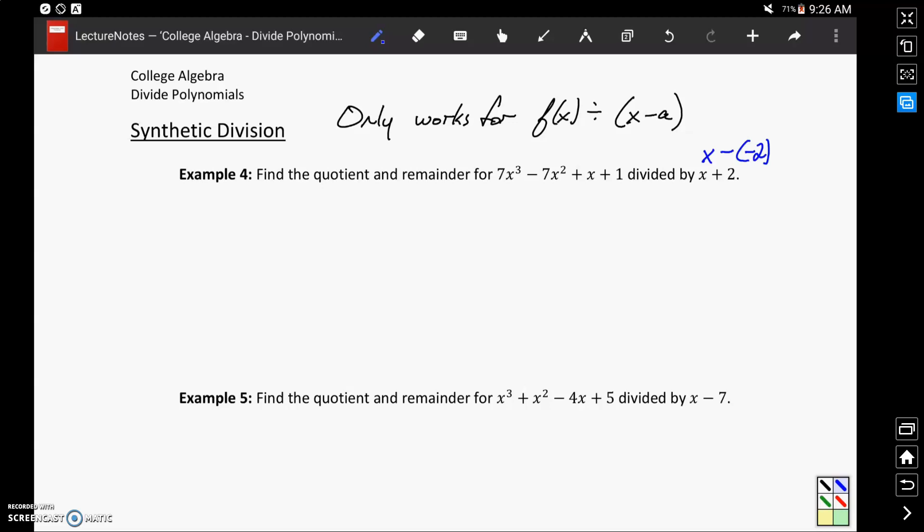So let's look at how this process works. We'll take that value for a, which in this case is negative 2, and draw something that looks similar to that division notation we were using before, but under it we'll only list the coefficients for the polynomial that we're dividing into.